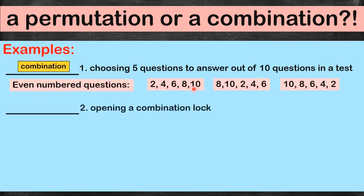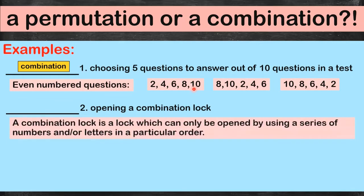Let's try another one: opening a combination lock. A combination lock can only be opened using a series of numbers or letters in a particular order — like a password. If you swap even two digits, you can't open it. So this is actually a permutation. In fact, it should really be called a permutation lock!